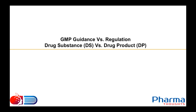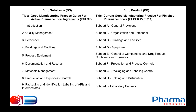Now let us look at the difference between GMP guidance and regulations for drug substance versus drug product. For APIs (drug substance), the relevant guidance is ICH Q7. For finished pharmaceutical drug products, the relevant regulation is USFDA 21 CFR Part 211. This is the key comparison.